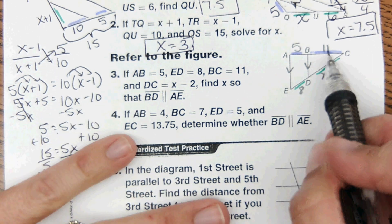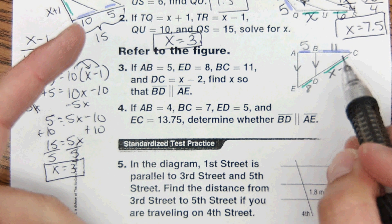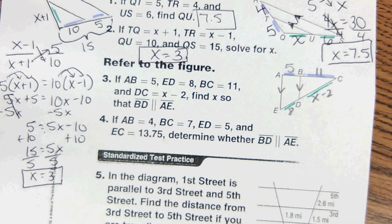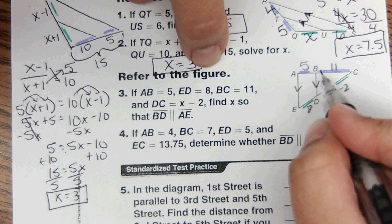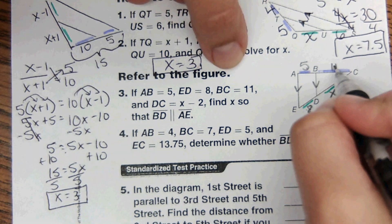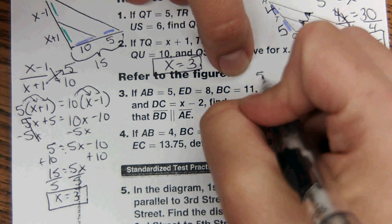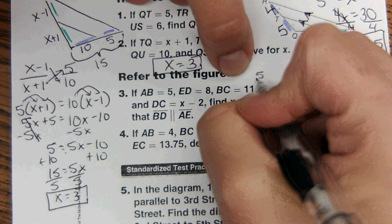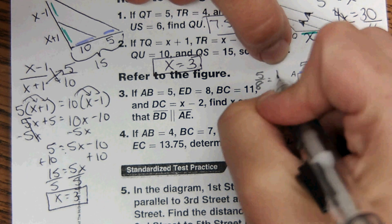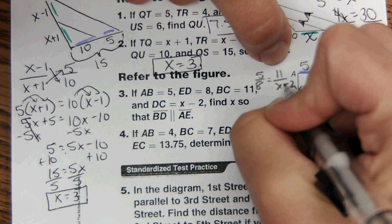When you set up the ratio you could either do 11 over 5 equals this over this, or you could do top to bottom. That would be fine as well. In my brain it makes sense to do top to bottom equals top to bottom right now. So I'm going to do 5 over 8 equals 11 over x minus 2.